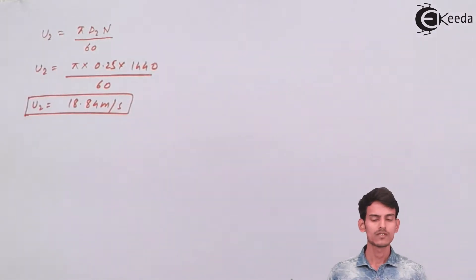We have u2 as well. Now let's draw the outlet triangle and move on to calculating the value of angle phi.